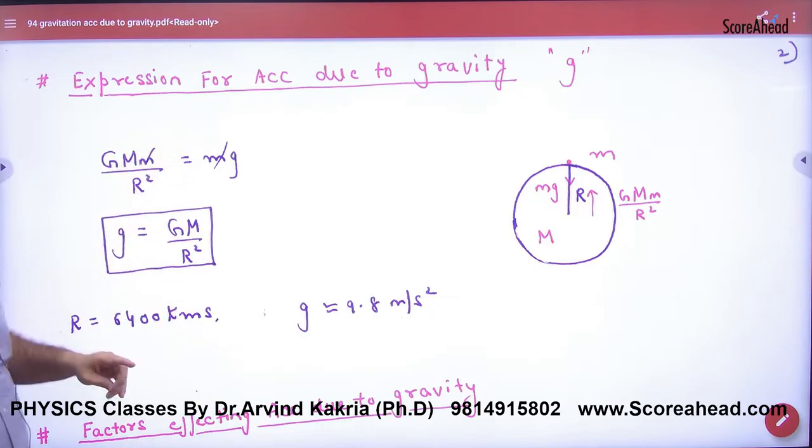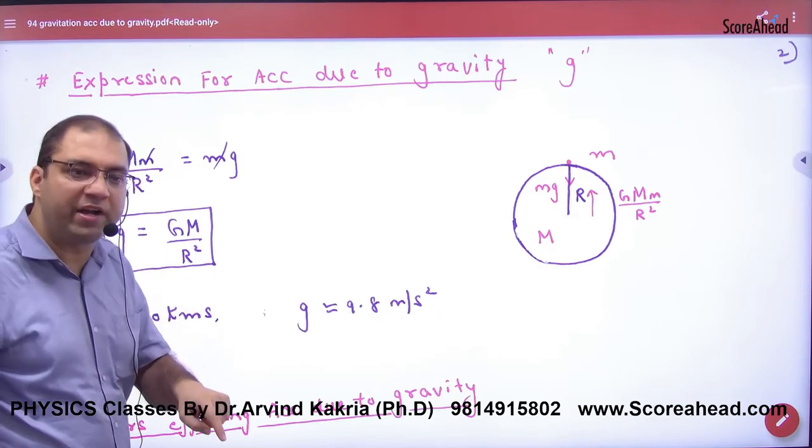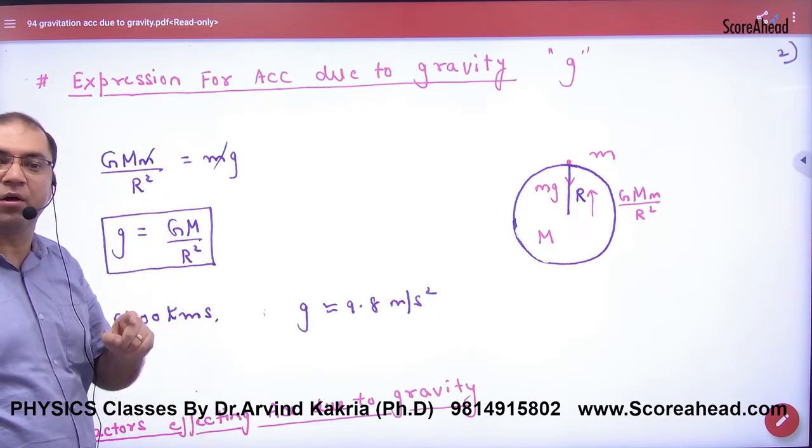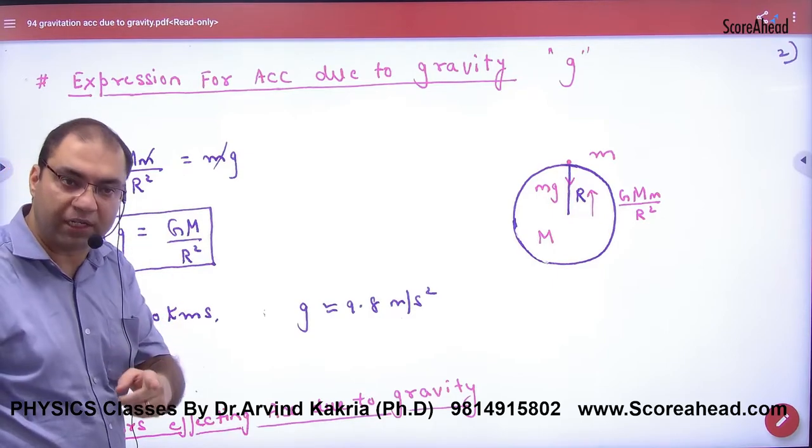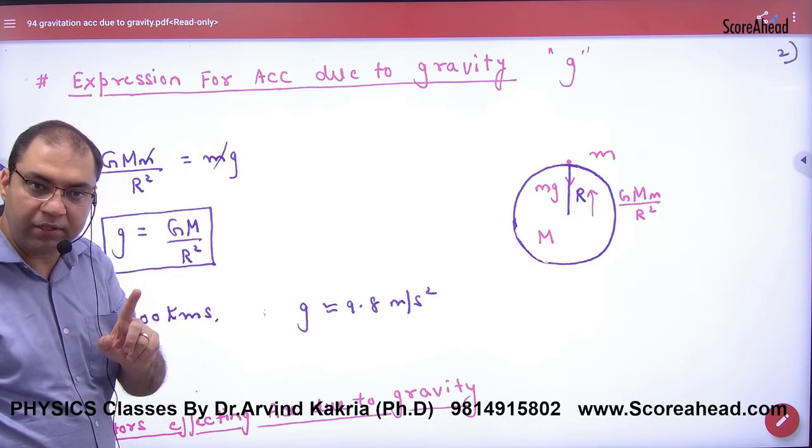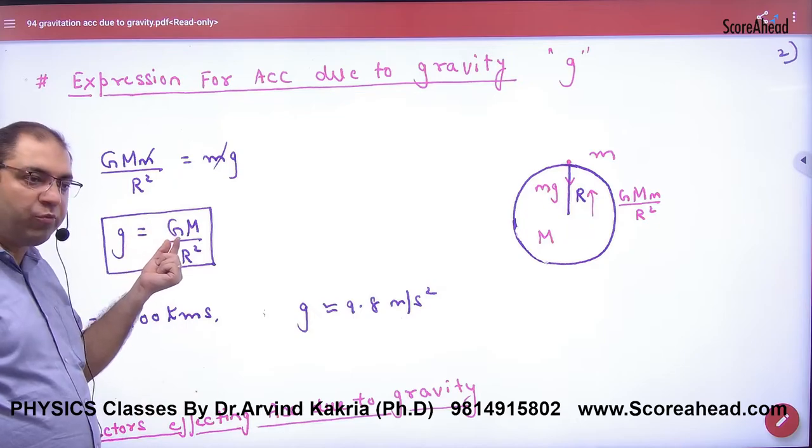So the acceleration due to gravity of any planet is mass dependent. As much mass as the planet has, the acceleration due to gravity will be more. Clear here? And if you put G value in it, mass of earth,